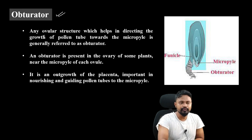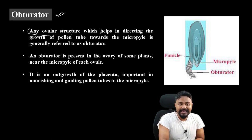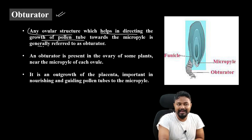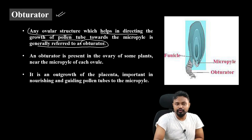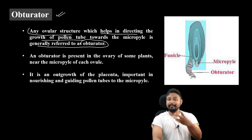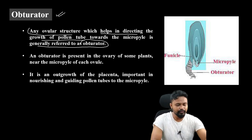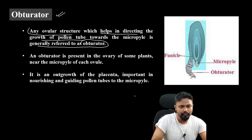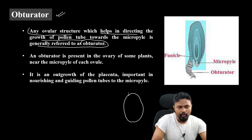Next is the obturator. The obturator is any ovular structure which helps in directing the growth of the pollen tube towards the micropyle. Any such structure is generally referred to as an obturator.